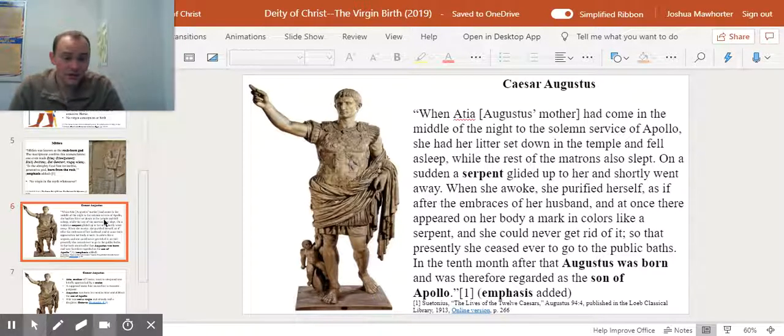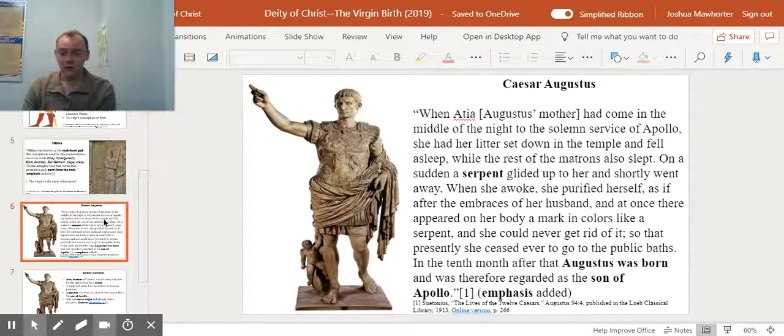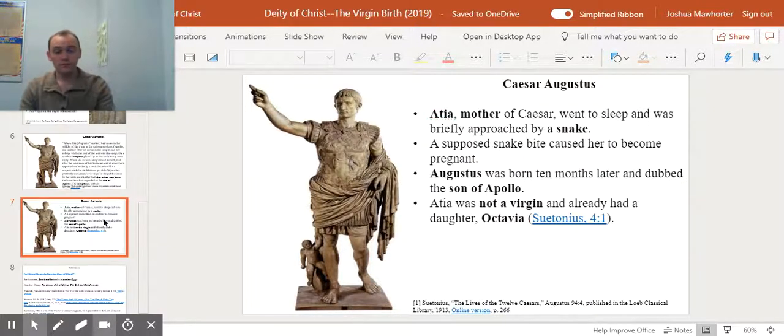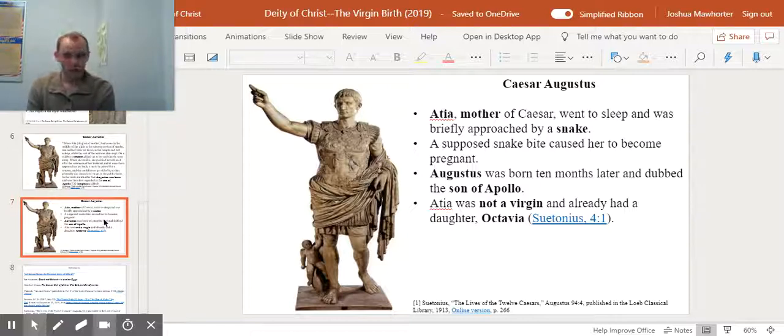On a sudden, a serpent glided up to her and shortly went away. When she awoke and purified herself, as if after the embraces of her husband, at once there appeared on her body a mark in colors like a serpent, and she could never get rid of it, so that presently she ceased ever to go to the public baths. In the tenth month after that, Augustus was born and was therefore regarded as the son of Apollo. Now, Jesus' story may come in here, but by way of contrast. This isn't a virgin birth. Atia, the mother of Caesar, went to sleep and then is briefly approached by a snake in the temple of Apollo.